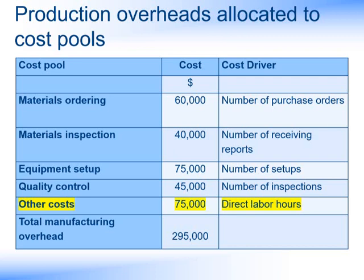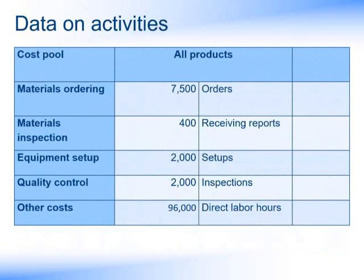Then we come to our other costs. We usually find there's no specific basis that we can allocate these on, so we do have to use some sort of arbitrary basis, which in real life is typically the direct labour hours associated with each product. If more appropriate, we might use machine hours where products are produced via machines. Having decided the basis on which we're going to allocate costs, we then need to ascertain the number of orders raised in the year, the number of inspection reports, equipment setups, quality control inspections, and direct labour hours. Very often it's an estimate of how many orders we'll raise in the year — a point we'll come back to later. Note this is for all products.